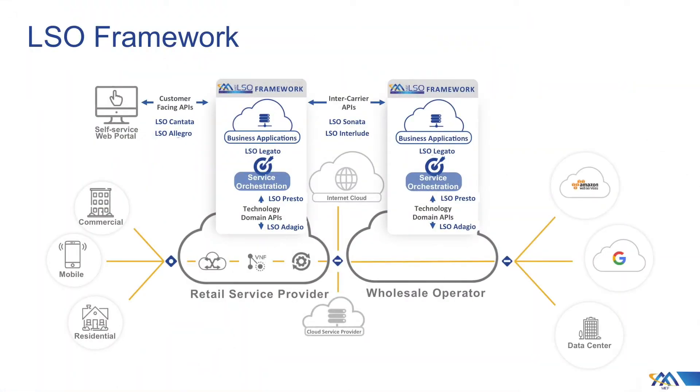In the LSO reference architecture, you've got the service order and a set of functions — the SOF function is one of the key ones. You've got your customer domain, your service provider domain, and then your partner domain. In the middle of this is the service orchestration functionality, and it has its north, south, east, and west interfaces.